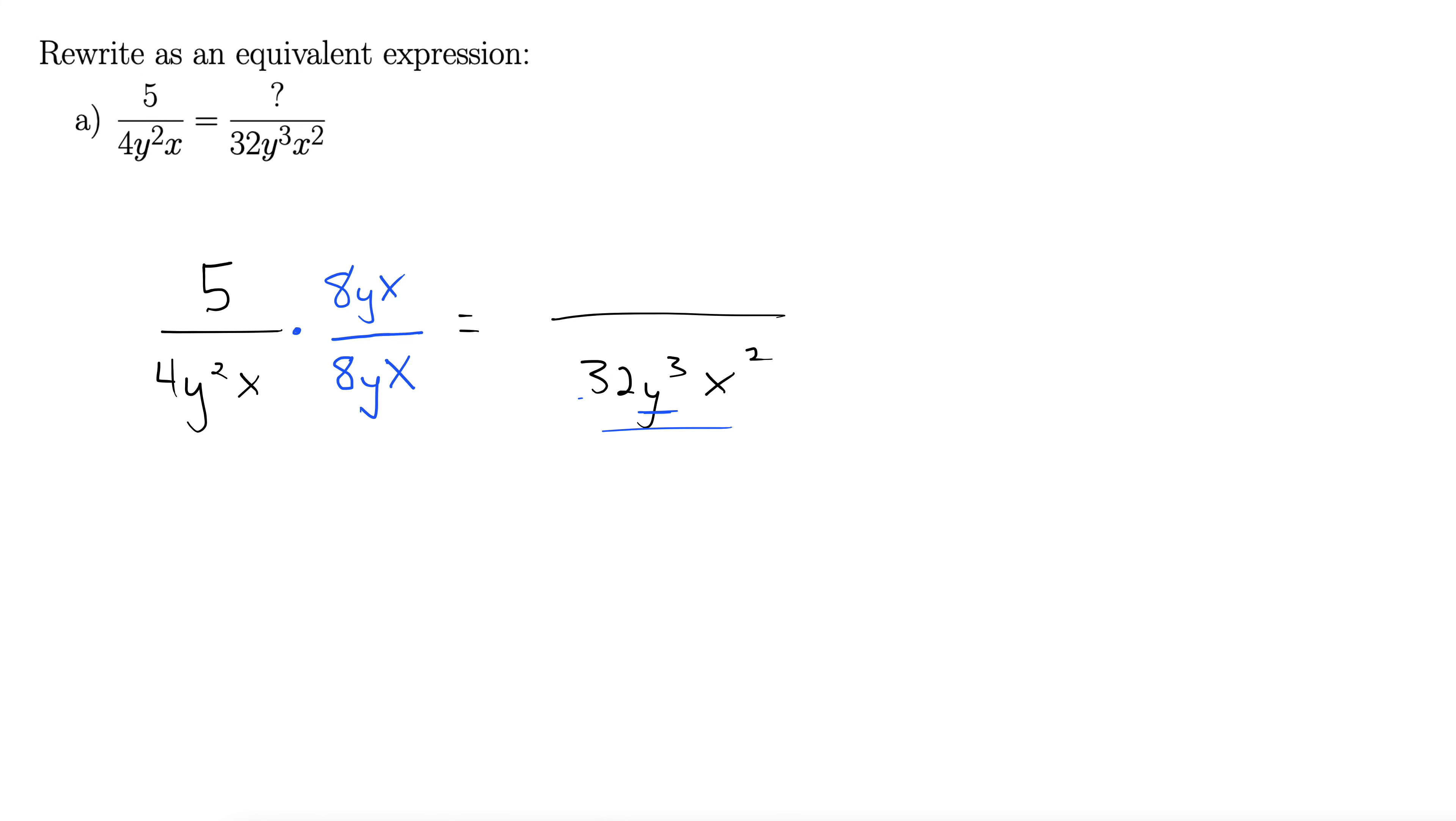And some texts write an enormous 1 around this. This is all one giant 1, right, because we're allowed to multiply by 1. So, by doing the same thing in the numerator and denominator, we're really just multiplying by 1.